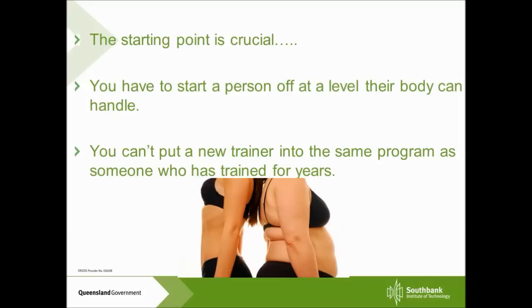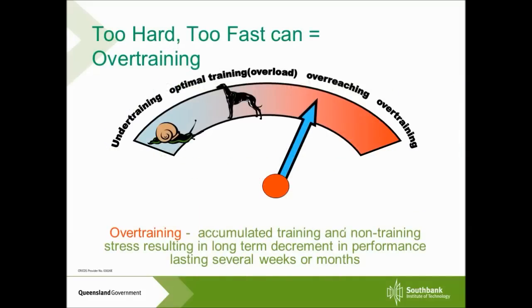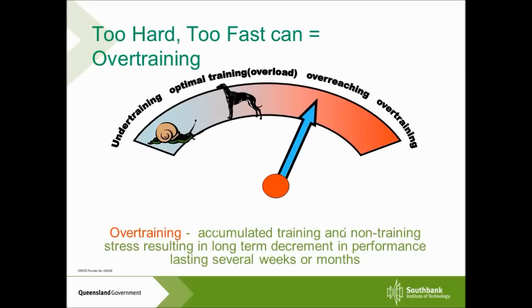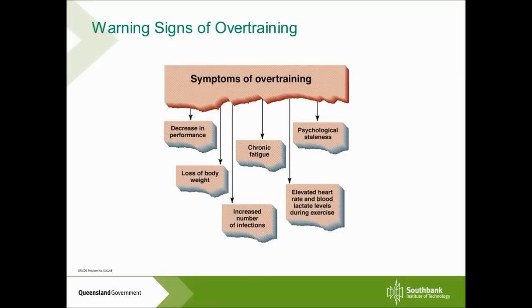If we push someone too hard too fast, it can lead to a state called overtraining. We are trying to overload the body, but we don't want to reach overtraining. Overtraining is when accumulated stresses within the body — either from training or from a person's lifestyle — combine and cause the body to change in its functioning, resulting in a decrease in athletic performance. This decrease can last anywhere from several weeks up to months and has been seen as a precursor to chronic fatigue syndrome.